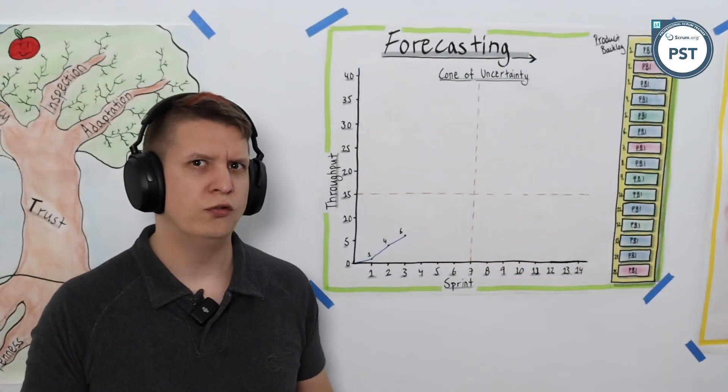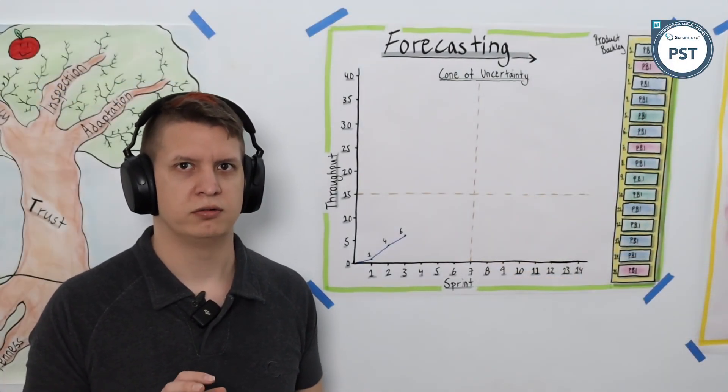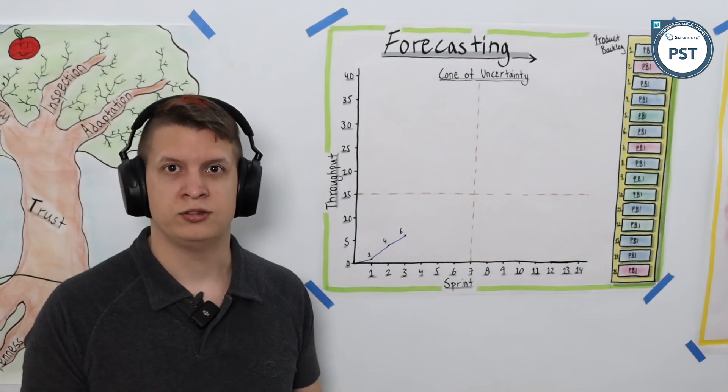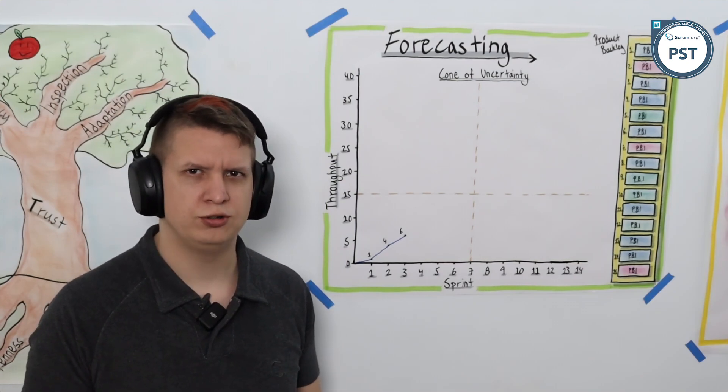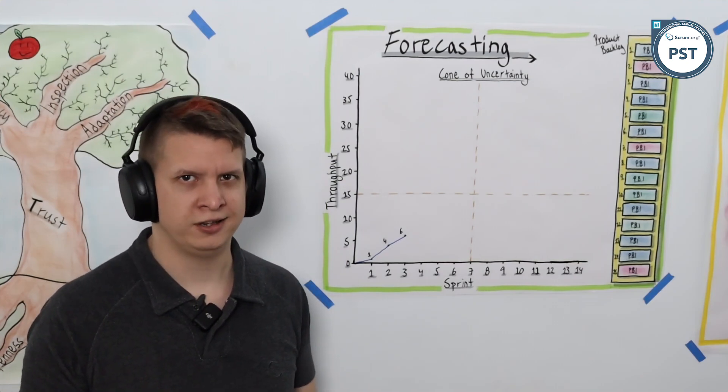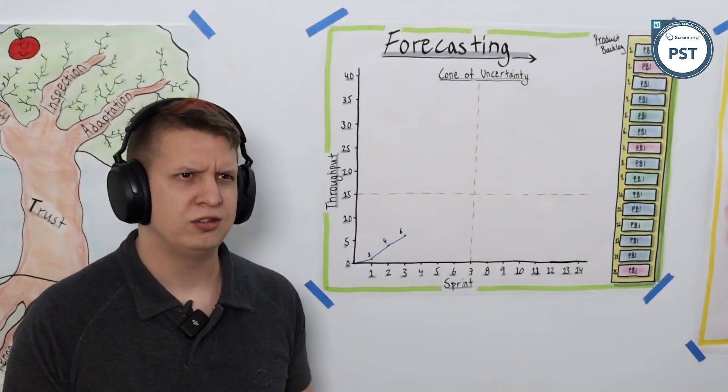A large but often overlooked part of product backlog refinement is forecasting and being able to answer that initial question of when will it be done. That is what we're going to talk about right now - forecasting.